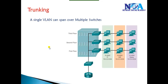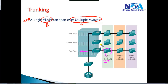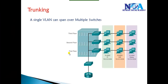Before we discuss the complete trunking concepts, first we'll try to understand why there is a need for trunking. A single VLAN can span over multiple switches. This means in your production network, you could have some users of the IT department sitting on the ground floor, some on the first floor, some on the second floor, and some on the third floor. Connecting everyone to the same switch physically is not possible.